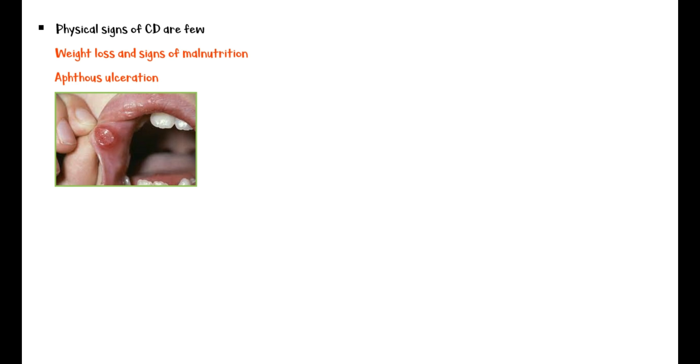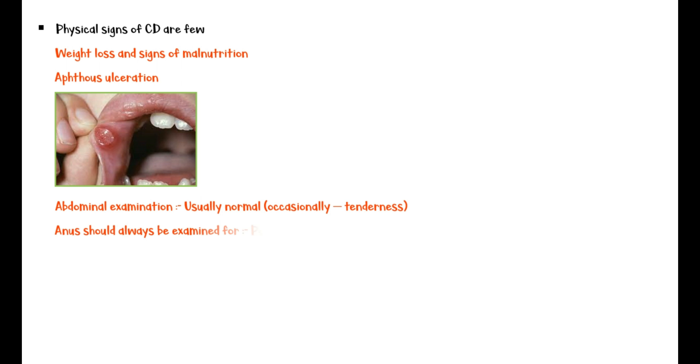Physical signs are few in Crohn's disease patients. Weight loss and signs of malnutrition may be found on examination. Aphthous ulceration of the mouth is often seen. Abdominal examination is usually normal, although tenderness may occasionally be present. The anal canal should always be examined for perianal abscesses, fissures, and edematous anal tags.